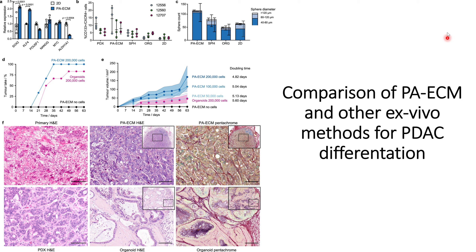This was measured in terms of tumor volume. When PAECM is encapsulated with 50,000 cells, the tumor volume growth rate is similar to organoid with 200,000 cells. But when increased to 200,000 cells, the doubling time is reduced to 4.82 days compared to 5.13 days for organoid cells. This further substantiates that pancreatic cancer cells cultured in PAECM show more aggressive behavior, similar to pancreatic tumors observed in humans.